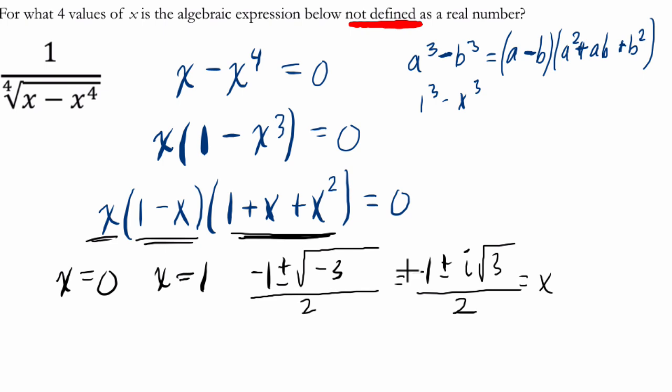And if x equals either of those values, negative 1 plus i times the square root of 3 over 2, or negative 1 minus i times the square root of 3 over 2, you'll get 0. So if any of these x values are true, and I'll circle them, your whole denominator would be 0, and this would not be defined. It would be an undefined result.